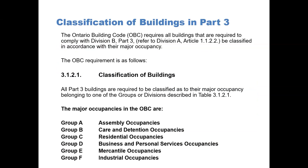All Part 3 Buildings are required to be classified as to their major occupancy, belonging to one of the groups or divisions described in Table 3.1.2.1. The major occupancies in the OBC are: Group A, Assembly Occupancies; Group B, Care and Detention Occupancies; Group C, Residential Occupancies; Group D, Business and Personal Service Occupancies; Group E, Mercantile Occupancies; and Group F, Industrial Occupancies.